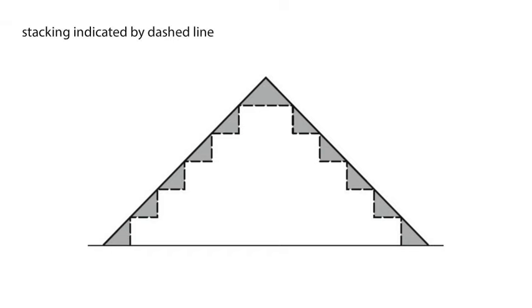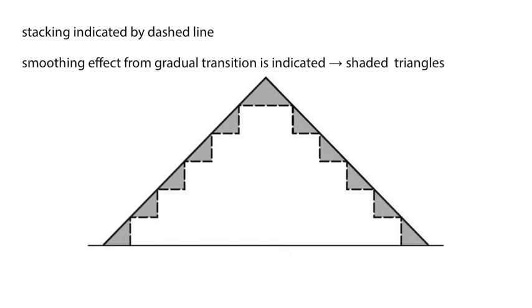The step-like form that results from stacking the successive planes is indicated by the dashed line, and the smoothing effect that results from assuming a gradual transition is indicated by the shaded triangles. It is the smoothing effect that gives the cone and the pyramid their true form.